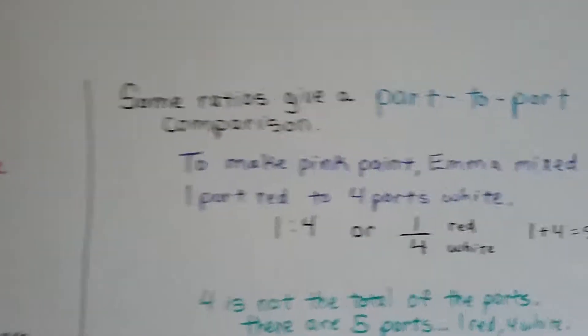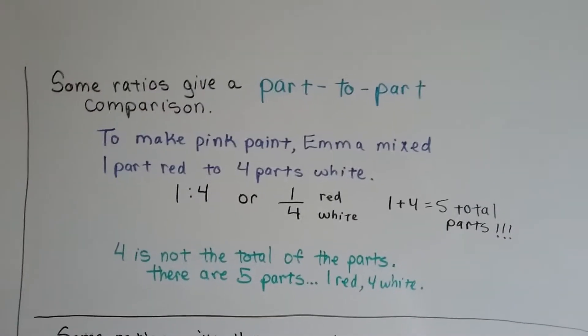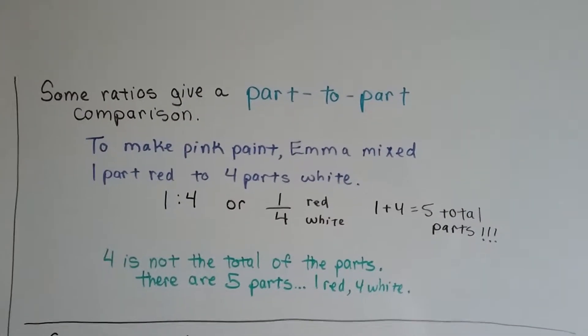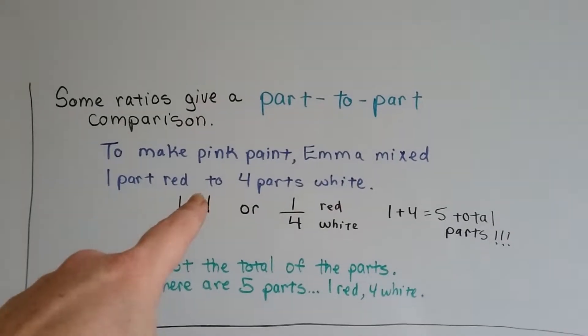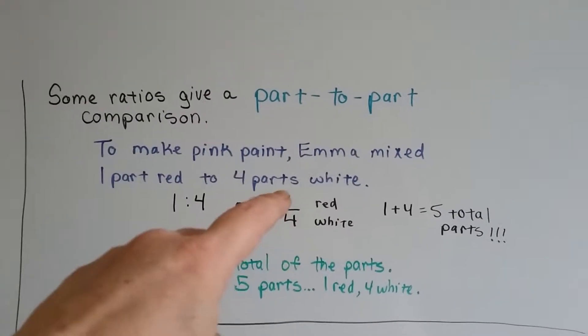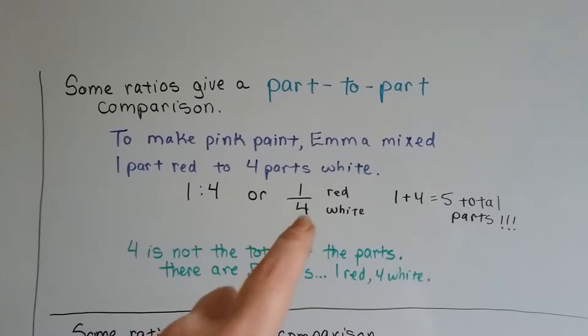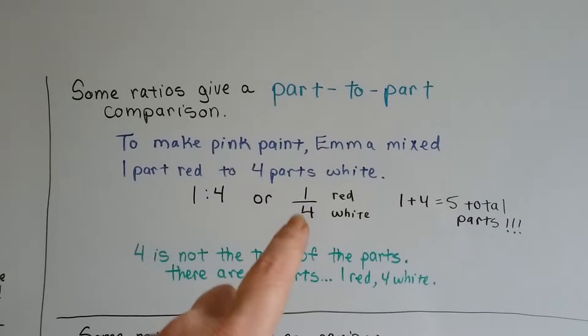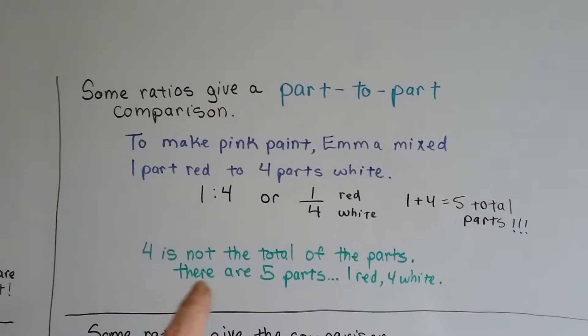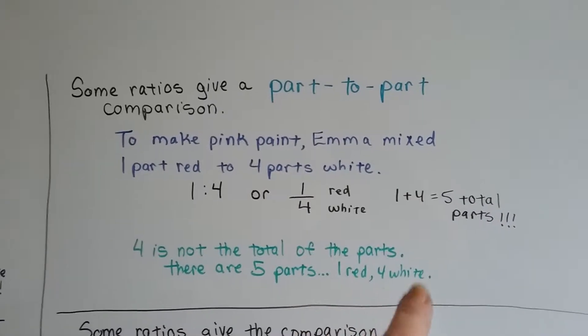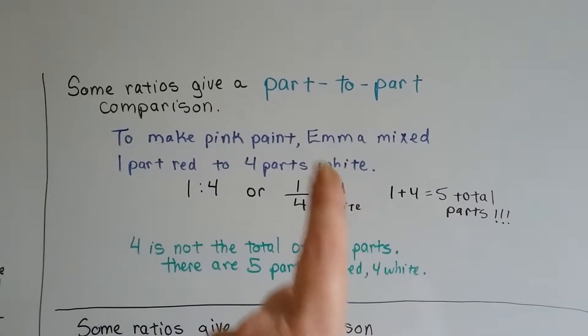Some ratios give us a part-to-part comparison. To make pink paint, Emma mixed one part red to four parts white. It could be written as 1 to 4 or 1 over 4. One is red, four is white. Four is not the total of the parts though. That's why it differs from a fraction. That's why ratios are different. There's five parts. One red and four white makes five total parts.